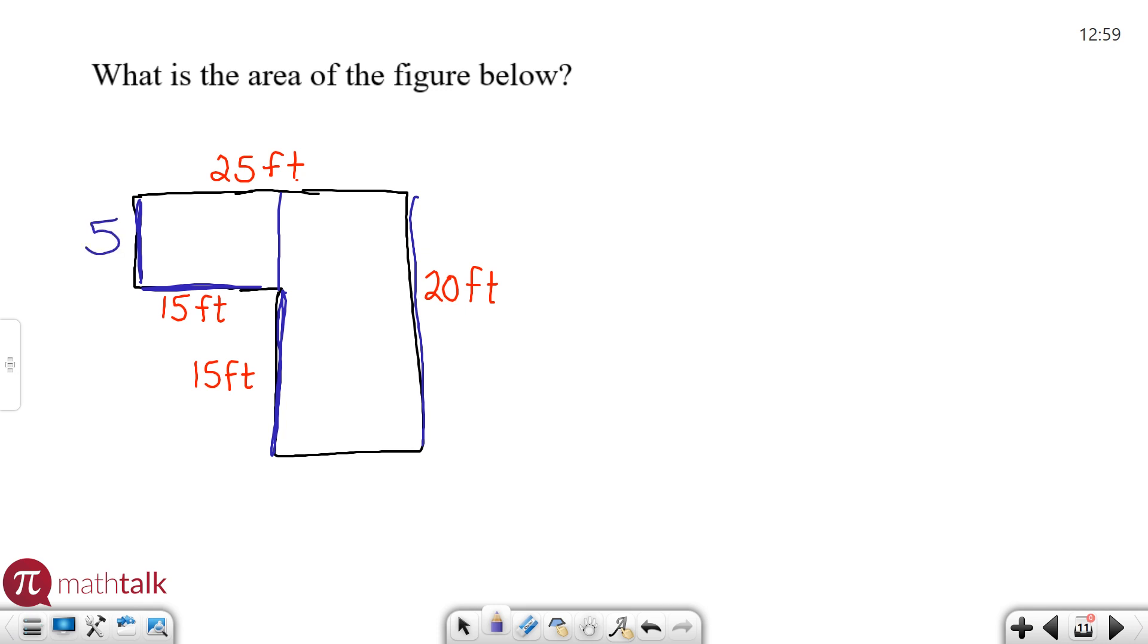Now I know I have a 5 by 15 rectangle, which I can find the area of. Area is length times width, so 5 times 15 is going to be 75. I found one of my areas. Now let's do the same for the other one.